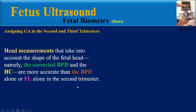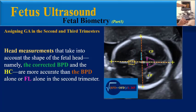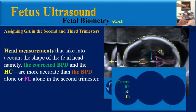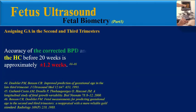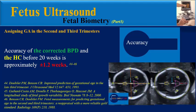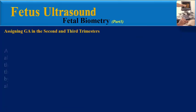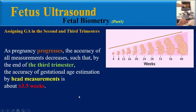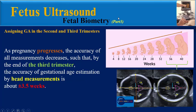Head measurements that take into account the shape of the fetal head — namely the corrected BPD and the HC — are more accurate than BPD or FL alone in the second trimester. Accuracy of the corrected BPD and HC before 20 weeks is approximately 1.2 weeks. As pregnancy progresses, the accuracy of all measurements decreases, such that by the end of the third trimester, the accuracy of gestational age estimation by head measurements is about plus or minus three and a half weeks.